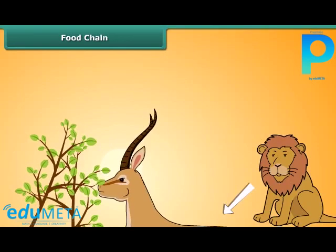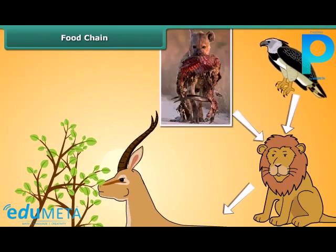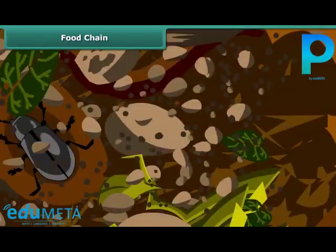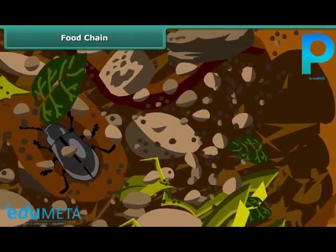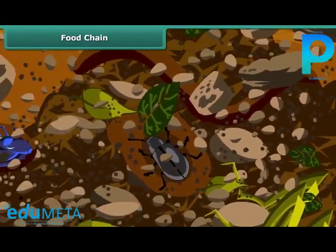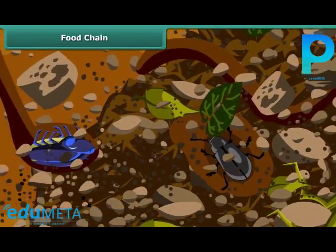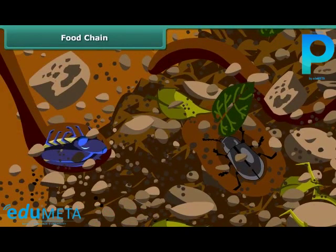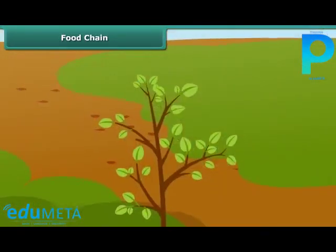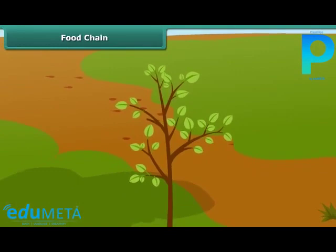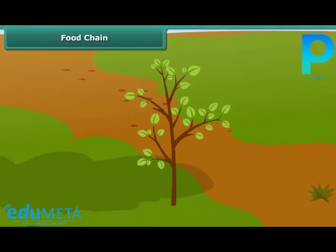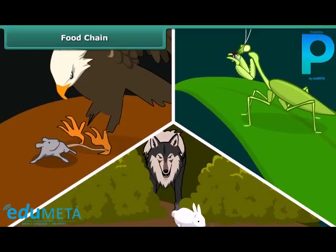The scavengers feed on dead animals. When the lions die, their physical remains are eaten by scavengers such as vultures and hyenas. Decomposers such as fungi and bacteria feed on the remnants of dead organisms and break them down into humus, which provides nutrients to plants. Thus, the food chain comes one full cycle.